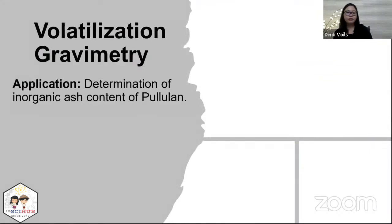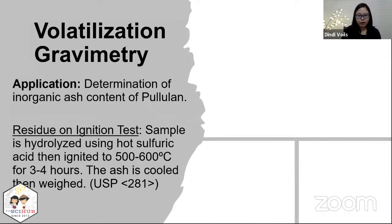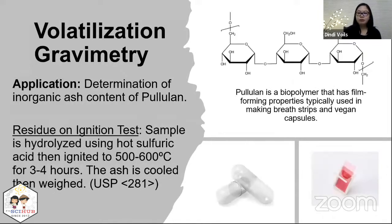A known application of volatilization gravimetry is the determination of inorganic ash content of polymers — using pullulan as an example, having worked on it for many years. This test is called the residue on ignition test, where you hydrolyze the sample using hot sulfuric acid and then ignite it to high temperatures of 500 to 600 degrees Celsius for three to four hours. The remaining ash is cooled and weighed. This test method is found in USP 281. Pullulan is a biopolymer with film-forming properties, typically used in breath strips and vegan capsules, and this test helps determine whether you have a stable film by ensuring low inorganic content.